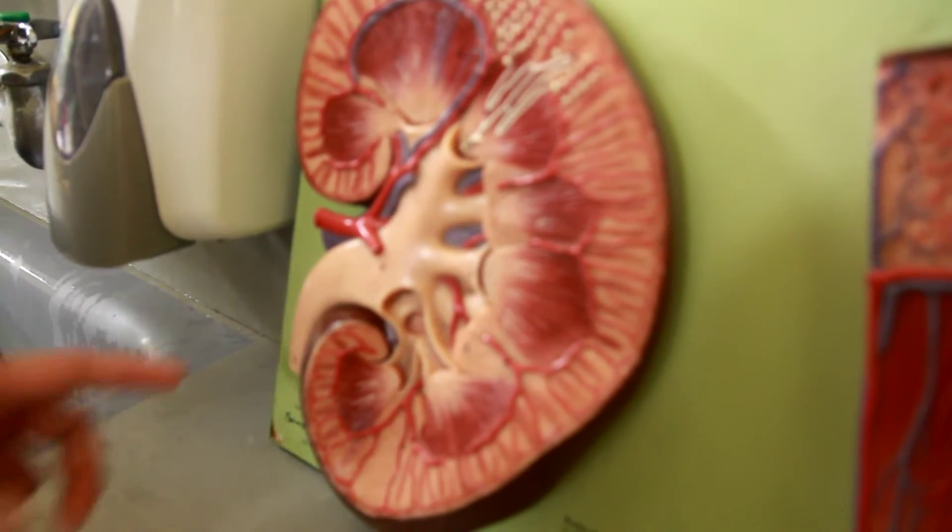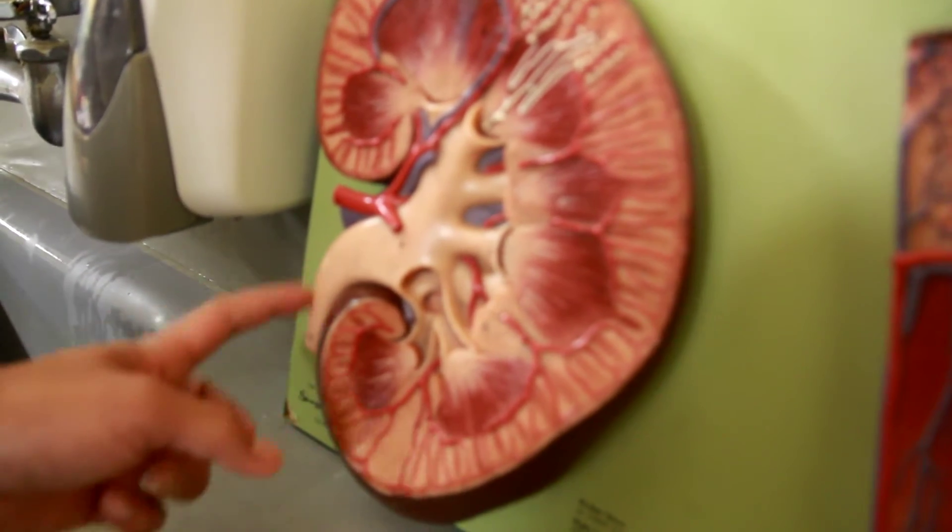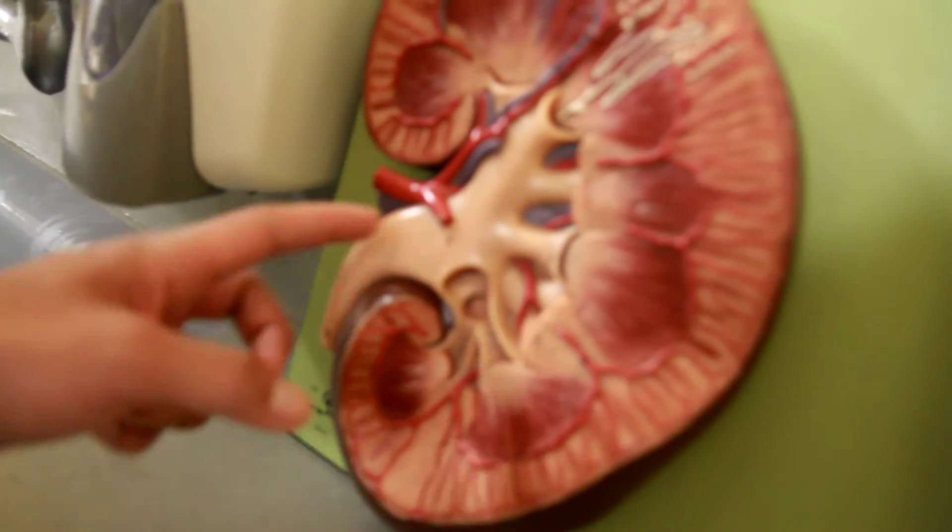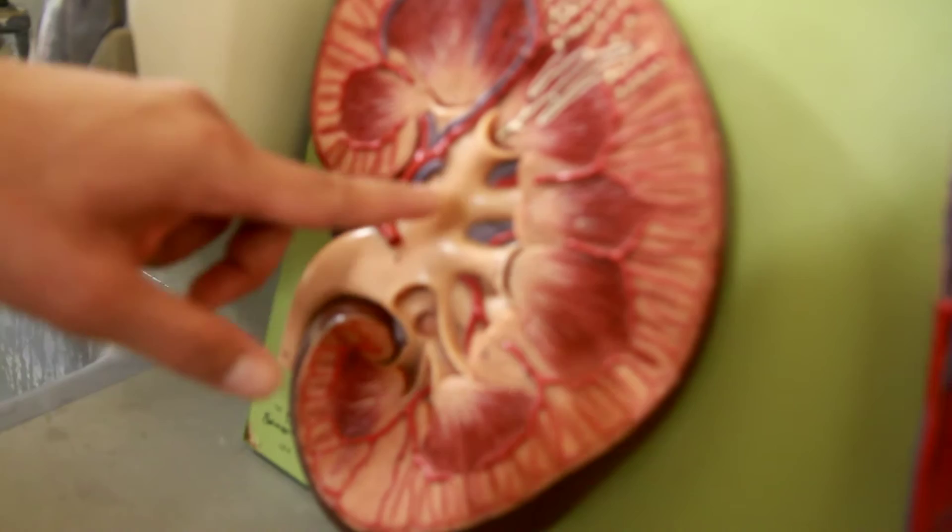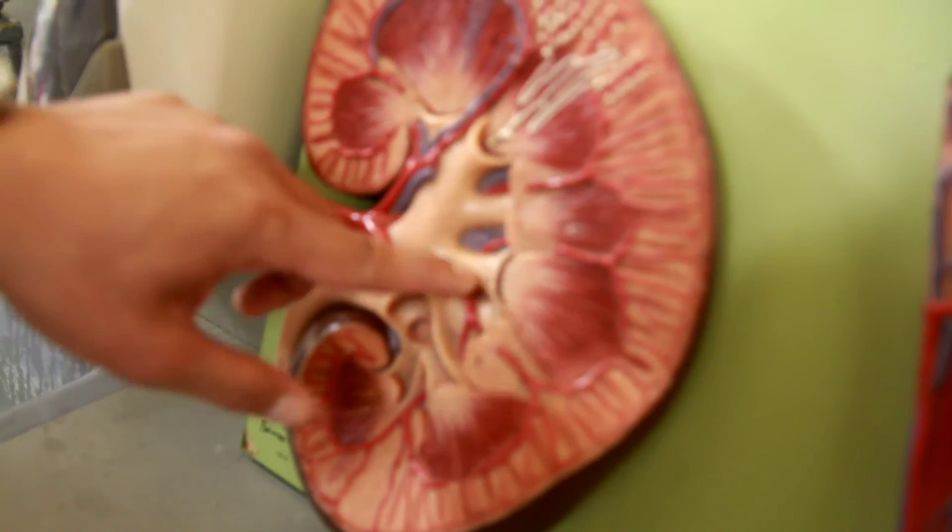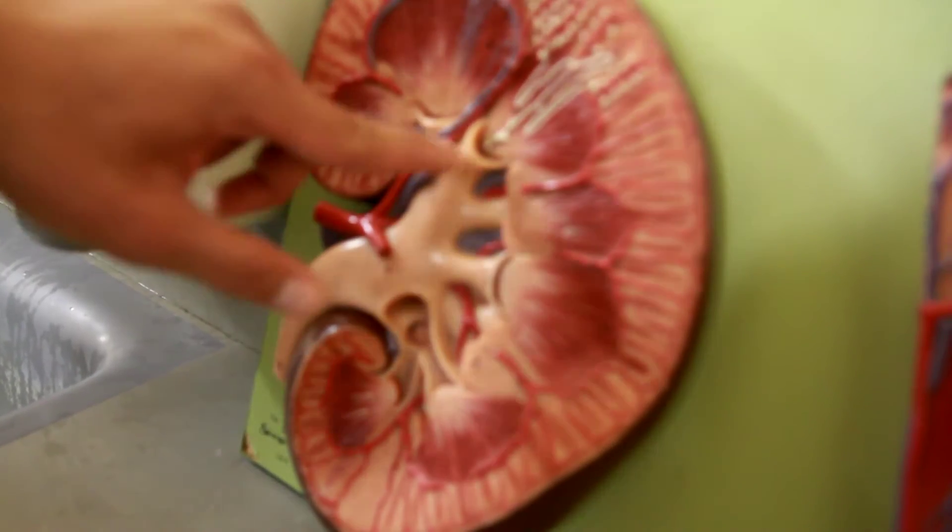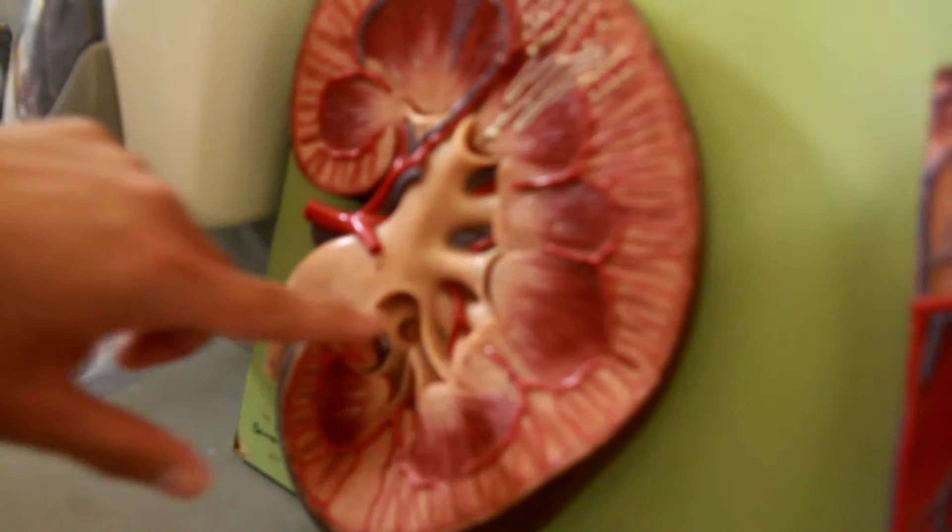And then you have the ureter, which extends to the renal pelvis, and then you have the major calyx and then the minor calyx, or the inner part.